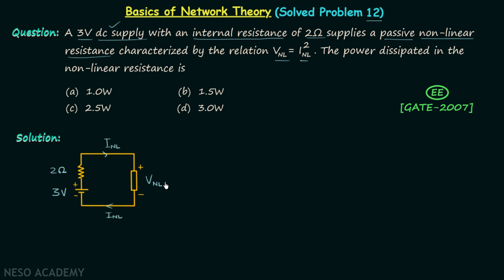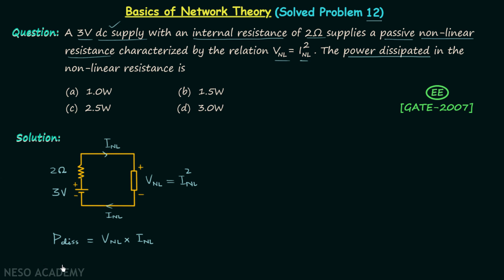According to the characteristic relation, V_nL = I_nL². We are required to calculate the power dissipated in the non-linear resistance, which is V_nL multiplied by I_nL. To calculate the power dissipated, we first need to find I_nL, because once we have I_nL we can replace V_nL by I_nL² and then substitute the value of I_nL.